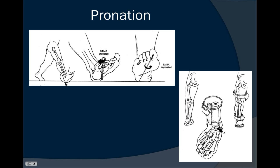As the heel first hits the ground, the friction between the heel and the ground becomes great enough such that the talus slides anteriorly on the calcaneus on its little shelf called the sustentaculum tali. This allows the talus to plantar flex, invert, and adduct. This places the transverse tarsal joint — the talonavicular joint as well as the calcaneal cuboid joint — axes parallel, which allows the foot to become more mobile. As the talus internally rotates and adducts, the lower extremity will follow and internally rotate and adduct as well.